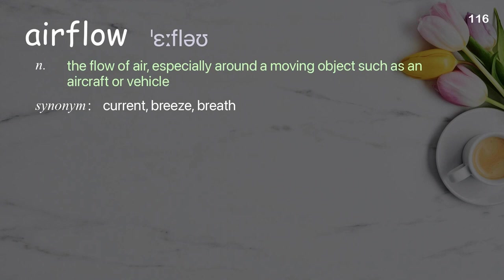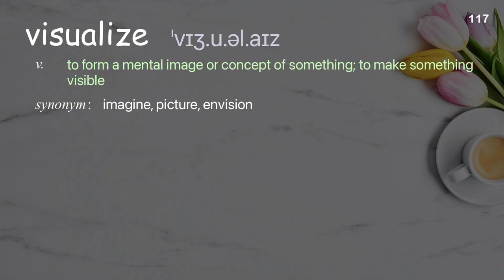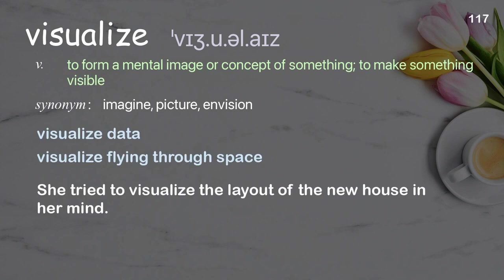Airflow: the flow of air, especially around a moving object such as an aircraft or vehicle. Examples: airflow duct, high-speed airflow. They thoroughly tested the airflow around their latest formula car. Visualize: to form a mental image or concept of something; to make something visible. Examples: visualize data, visualize flying through space. She tried to visualize the layout of the new house in her mind.